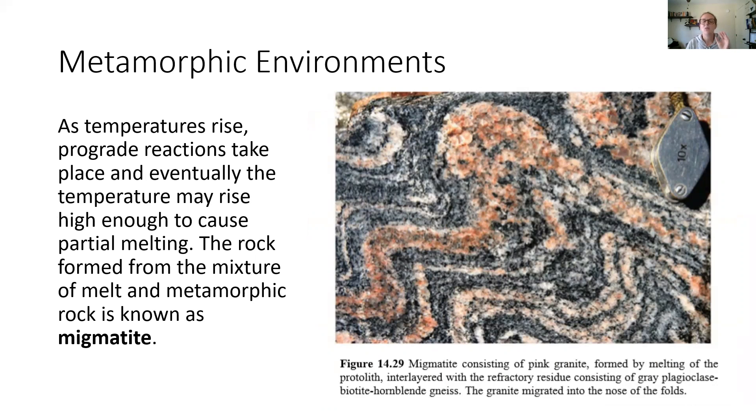So migmatite is what you get when the rocks just start flirting with melting. They don't melt all the way, but some of the grains do melt because we know minerals melt at different temperatures. So a migmatite is created when as temperature rises and prograde reactions are going through, there's a little bit of partial melting. The whole thing doesn't melt, but there's a little bit of partial melting. And you'll find these compositional layers where some of the layers are metamorphic. They never melted, but some of the layers did melt and they did migrate up through and cause deformation.